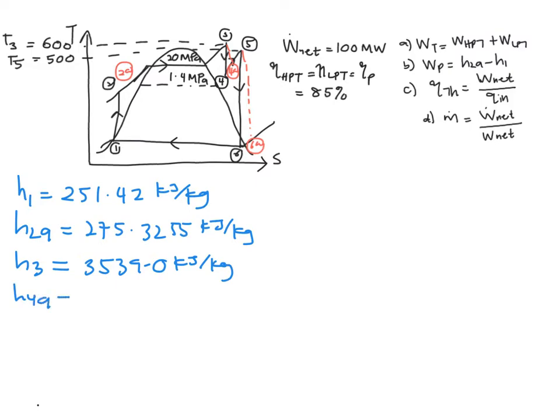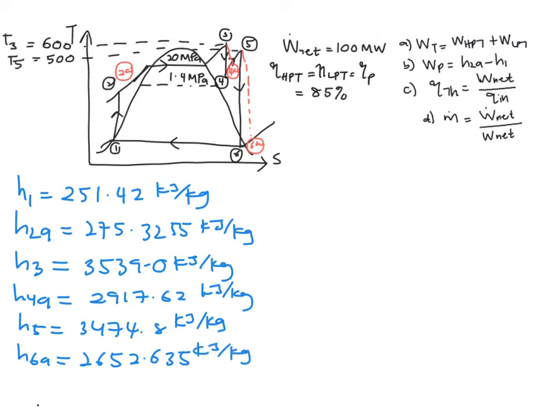H4A is equal to 2917.62 kJ per kg, H5 is equal to 3474.8 kJ per kg, and finally your H6A is equal to 2652.635 kJ per kg.